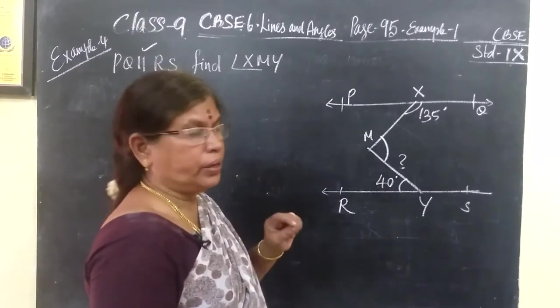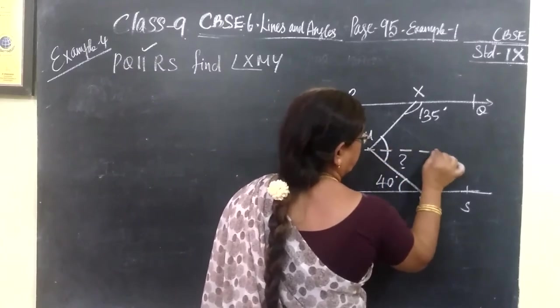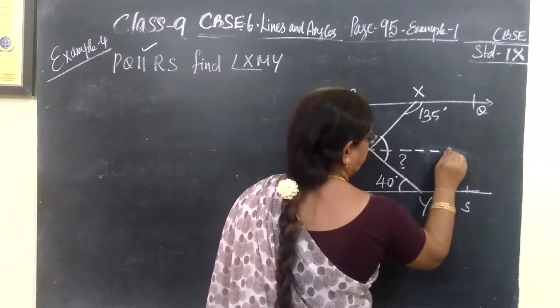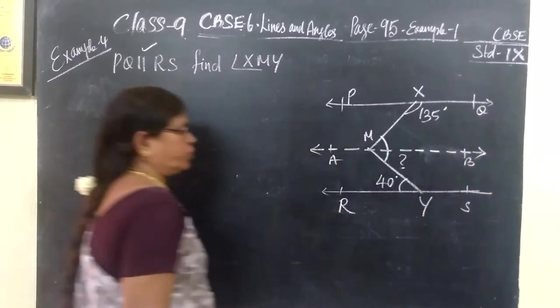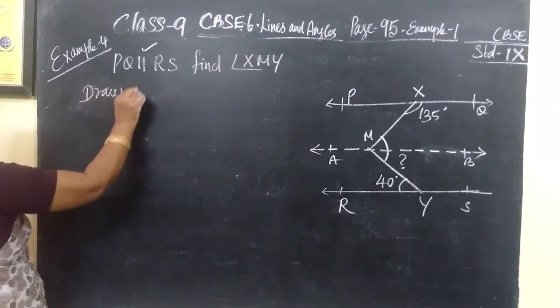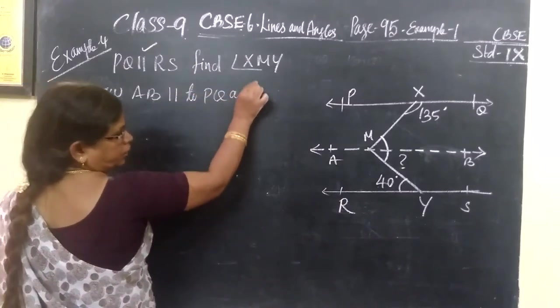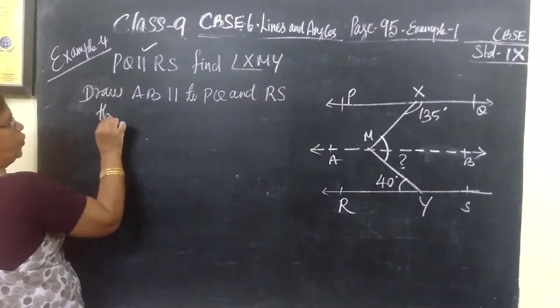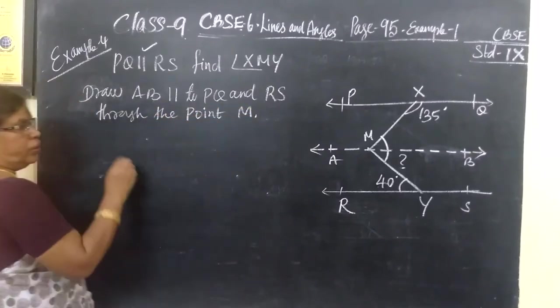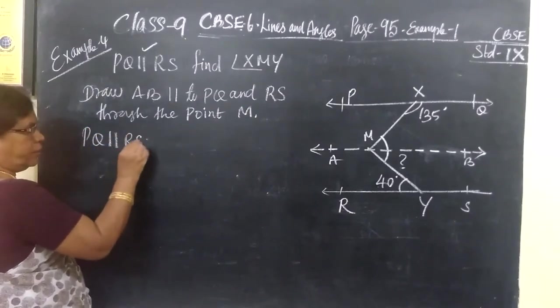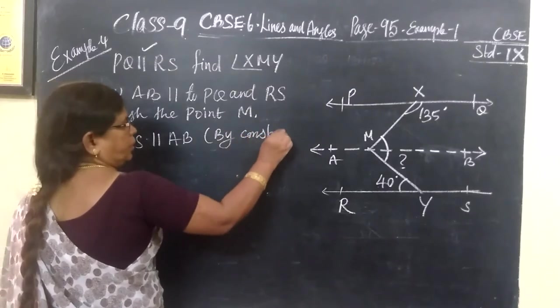Before that, we need to do one construction. Draw a line parallel to the given line and name it as A, B. So by construction, draw A, B parallel to P, Q and R, S through M, through the point M. That is P, Q parallel to R, S parallel to A, B by construction.